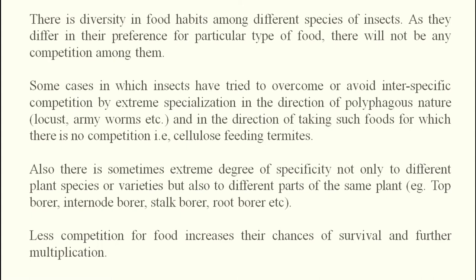Specificity to food is the next category. Stage-to-stage food preference differs, and there are sucking pests like aphids, mealybugs, and scale insects that feed on plant sap, while mosquitoes feed on animal blood, caterpillars feed on leaves, and termites feed on cellulose and wood. This tremendous diversity means there is no competition among them. There is even extreme specificity — for example, sugarcane top borers attack the top, shoot borers attack the early stage, internode borers, and stalk borers each occupy different niches.